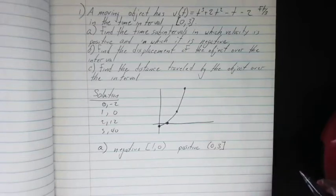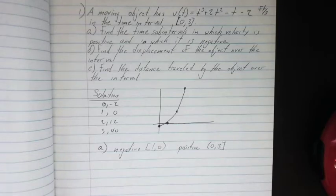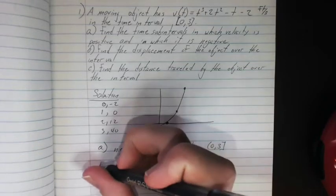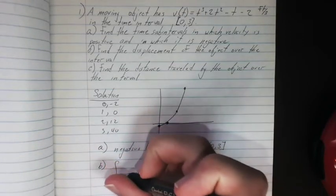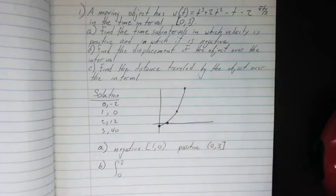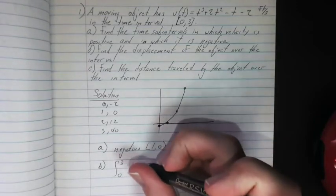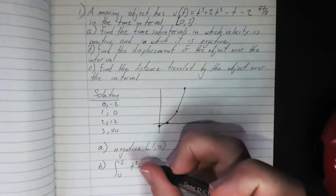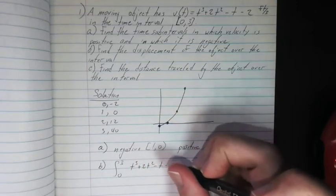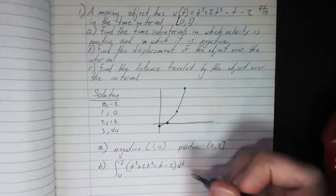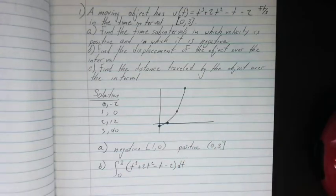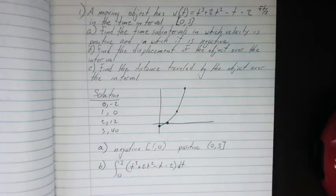So next step, we want to figure out the displacement. Now displacement is just where it is relative to where it started. So that can just be an integral, doesn't have to be broken up in anything. So just from 0 to 3, what did the velocity do? Well, let's just set it up. And now I'm just going to go over to an integral calculator and get my answer.